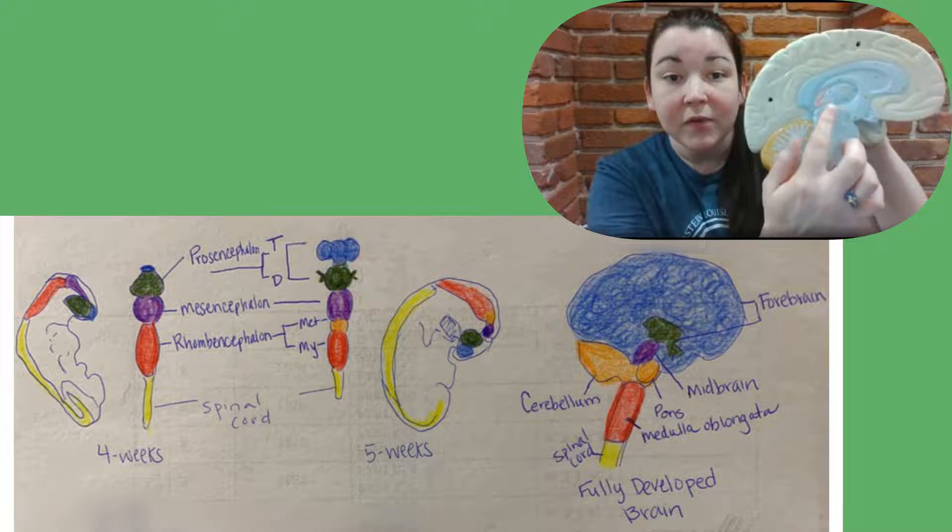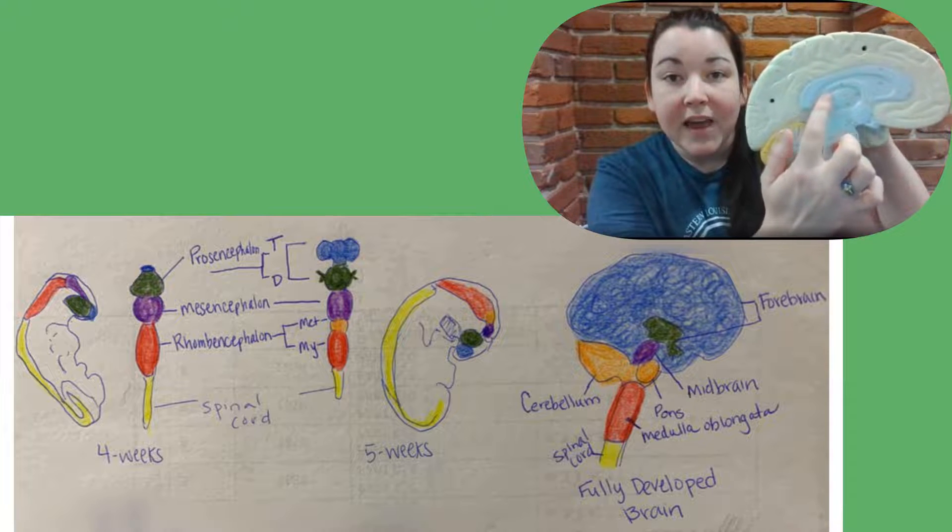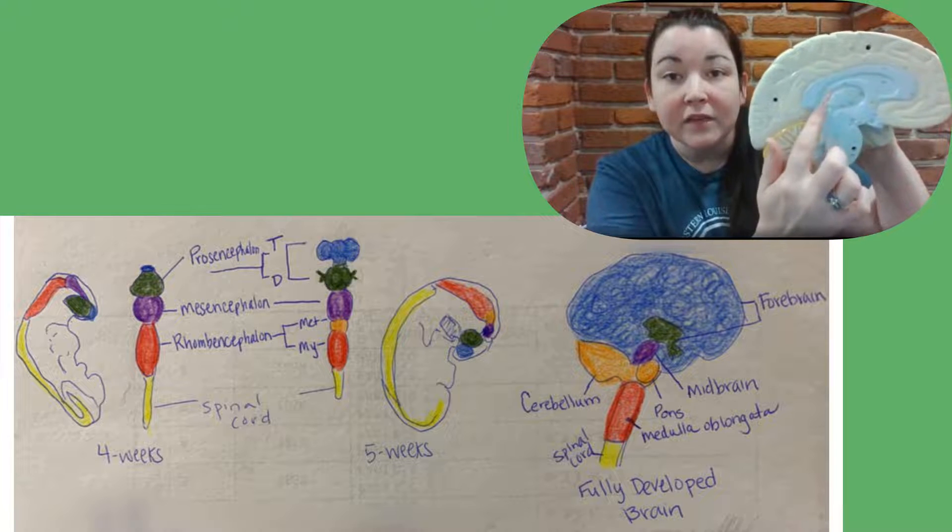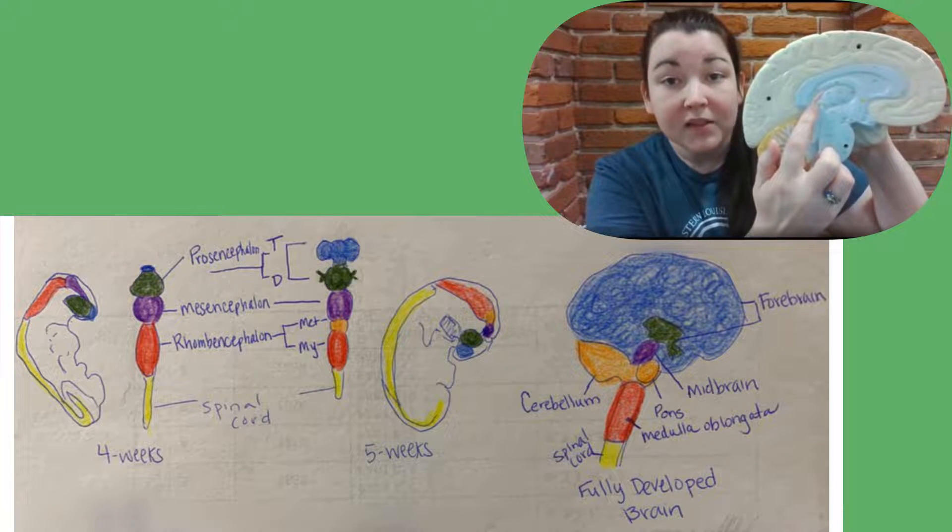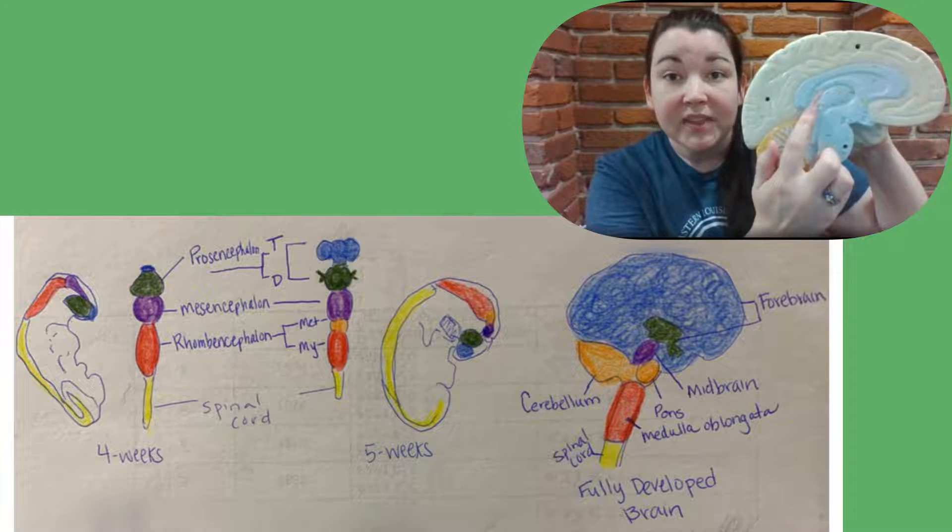It's also going to form this structure here. It looks like the hair of the seahorse. This is your pineal gland. It's involved in circadian rhythm, which is your sleep cycle. It helps make melatonin in the evening and serotonin during the daytime.